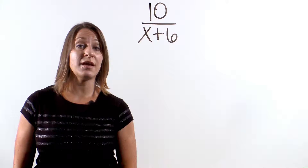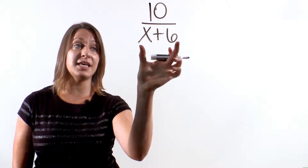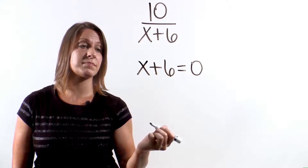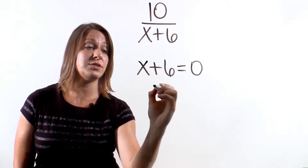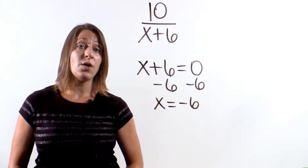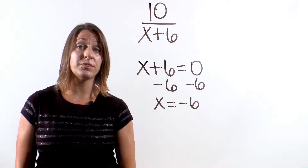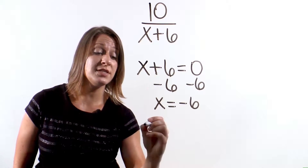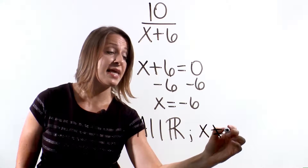Let's try another one. Let's find the domain of the rational expression 10 over x plus 6. The easiest thing to do is to set the denominator equal to 0. This helps us find what value of x would make the denominator equal 0. Solving gives us x equals negative 6. So the domain is all real numbers except x cannot equal negative 6.